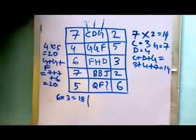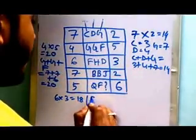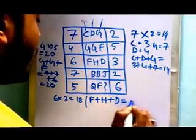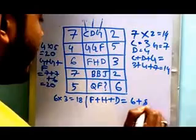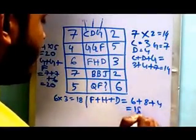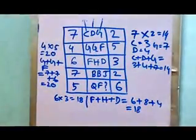And F plus H plus D equals 6 plus 8 plus 4 equals 18.